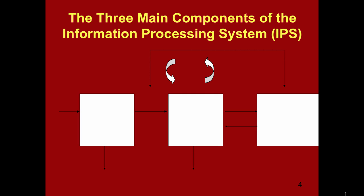Let's take a closer look at the information processing theory. This is the theory that will be the foundation of everything that we learn in EDUC 140. According to the theory, there are three main components to the information processing system: short-term sensory store, working memory, and long-term memory. Let's take a closer look at these three components.